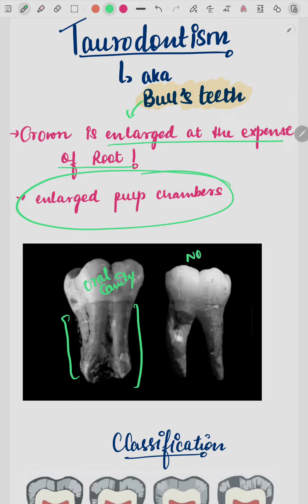In a normal tooth, the bifurcation point is very near to the cervical region. In taurodontism, the bifurcation point has moved away from the cervical region. When the bifurcation area has moved away from the cervical region, that condition is known as taurodontism.